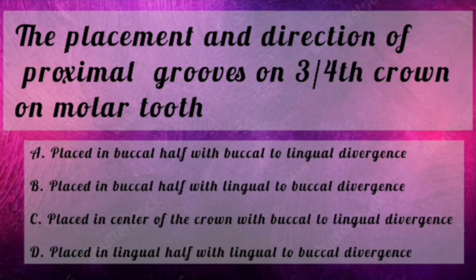If you know the answers, please comment in the comment section below or on the Instagram page, and a special mention will be made for correct answers. Now let's go into the answers of yesterday's MCQ. Yesterday's MCQ was about the placement and direction of proximal grooves on a three-fourth crown on a molar tooth. The answer is option A: placed in the buccal half with buccal to lingual divergence.